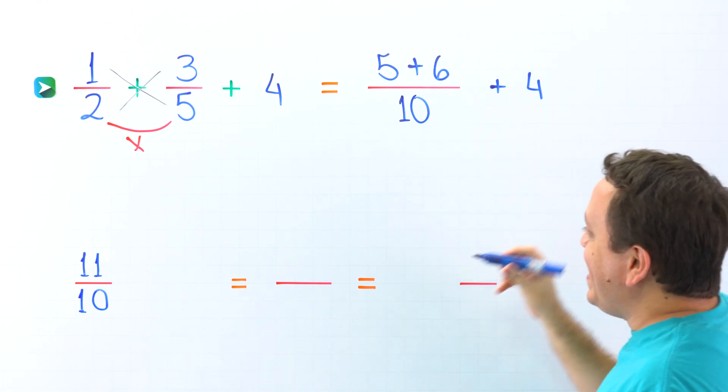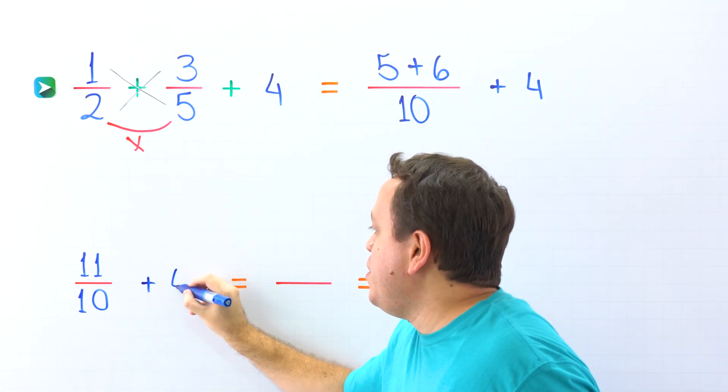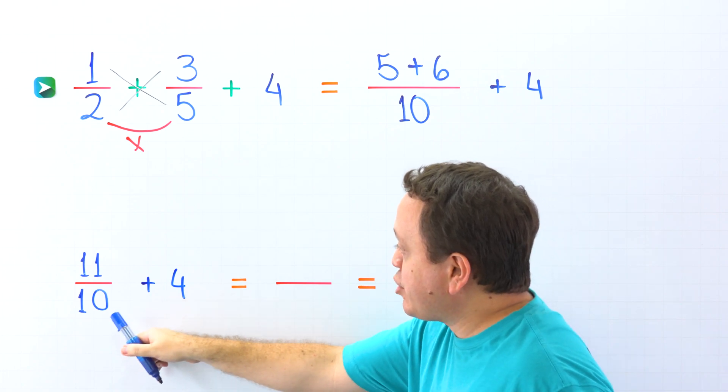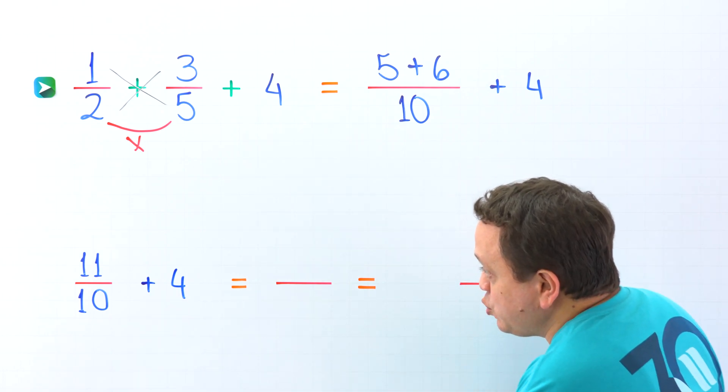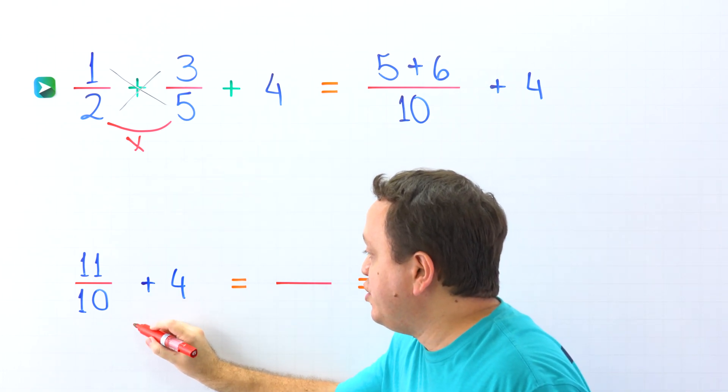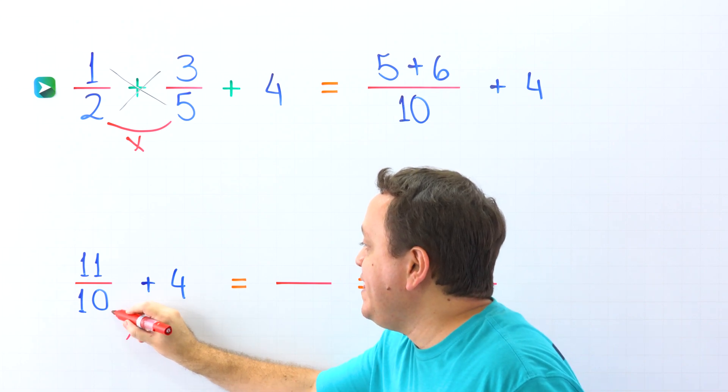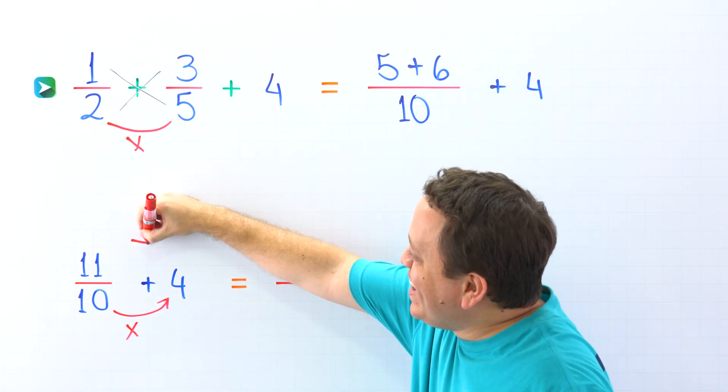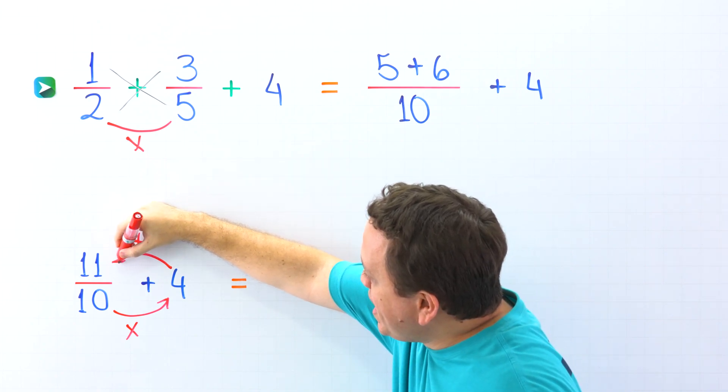And now we're going to add the whole number. Plus 4 come over here. We're going to add a fraction to a whole number. And the easiest way to add a fraction to a whole number is this one. We'll start by multiplying the denominator by the whole number. Then we add this result to the numerator.